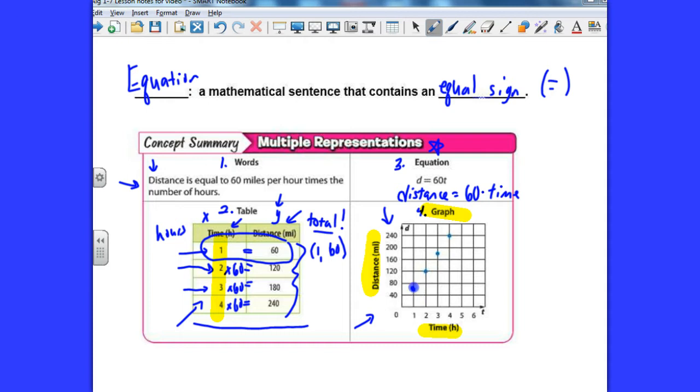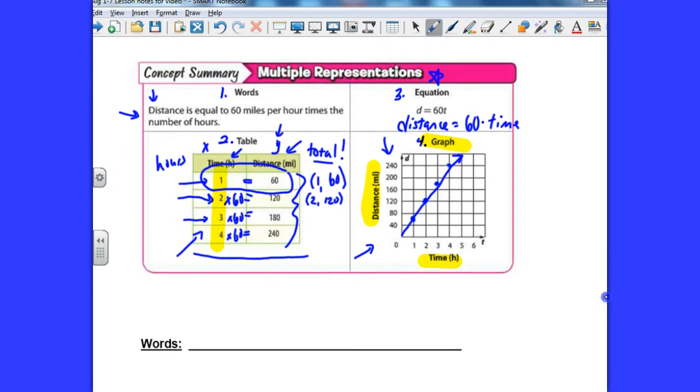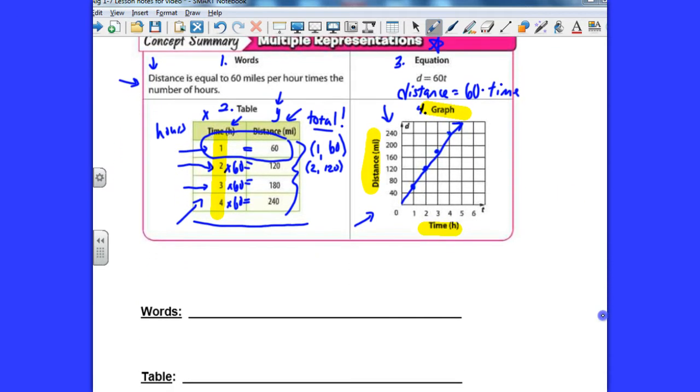At 2 hours, they went 120 miles. So they plotted 2, 120, and they did that with the rest of them. And what we could do is we actually could take a straight edge, draw this graph, and notice that this makes a line. That's actually called a linear function, which we'll get into what that means later on in the year. But it means it basically makes a straight line.